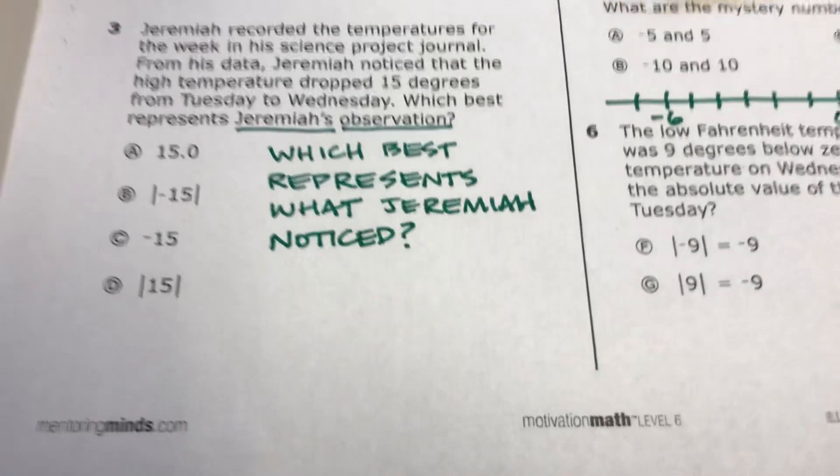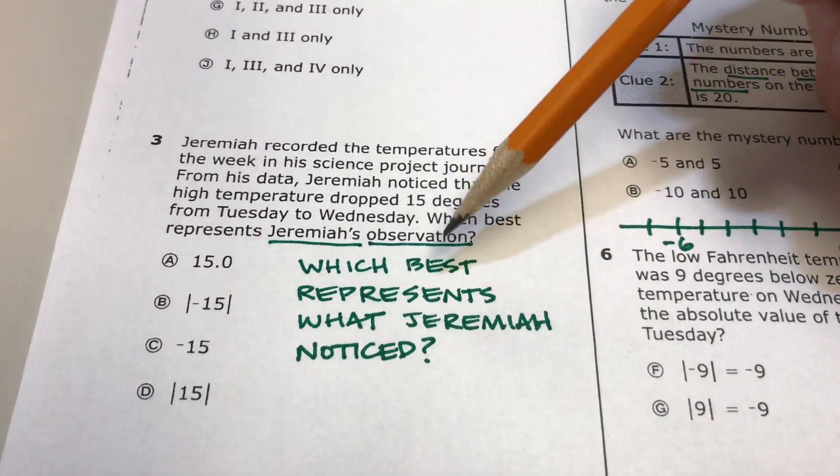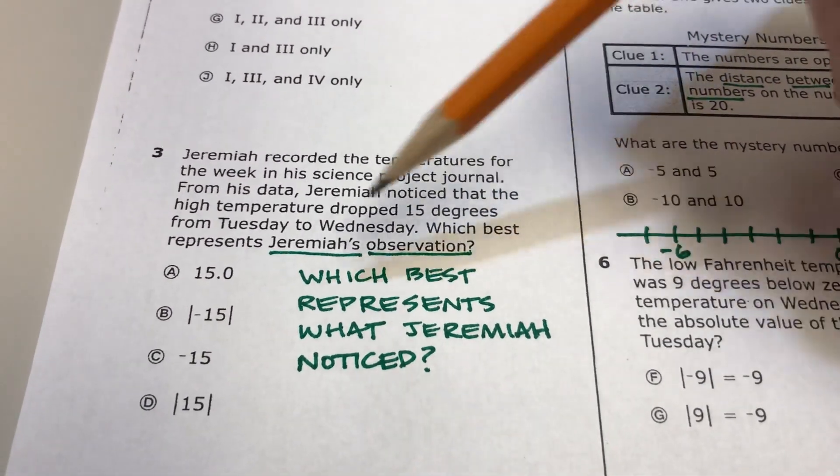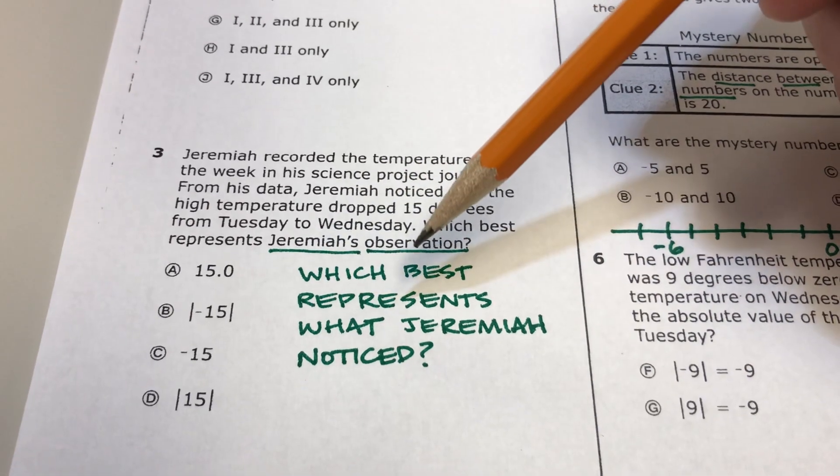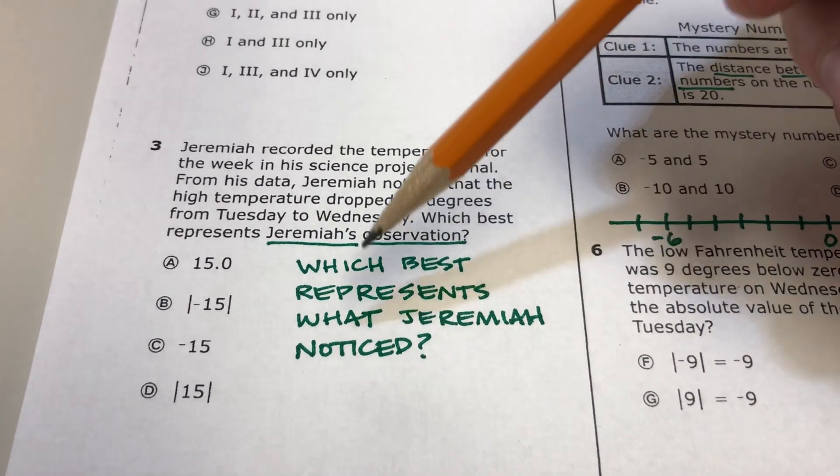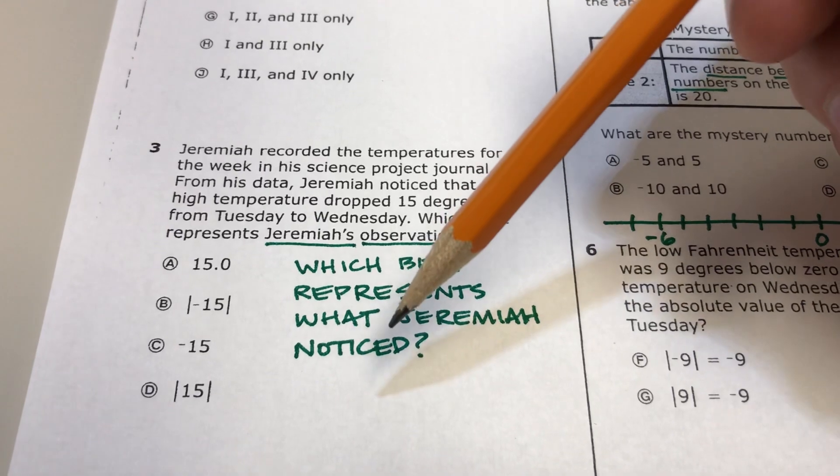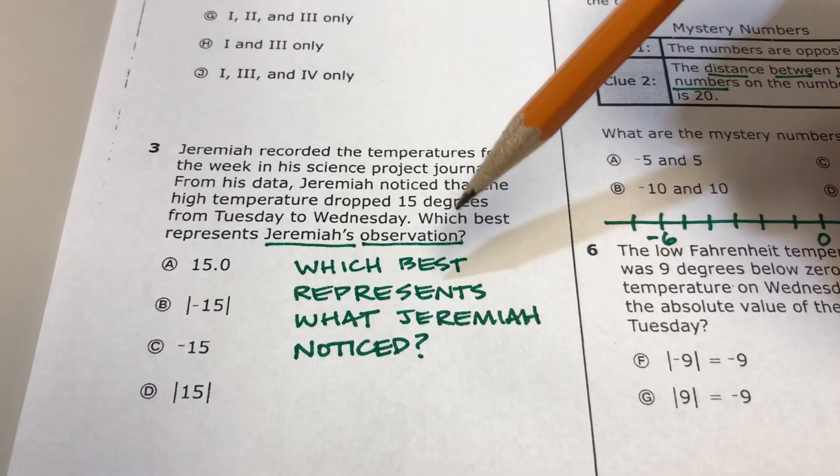Number three, people are getting tripped up over the word observation. It says which best represents Jeremiah's observation. A better way to say that maybe is which best represents what Jeremiah noticed. So some people were getting tripped over the word observation.